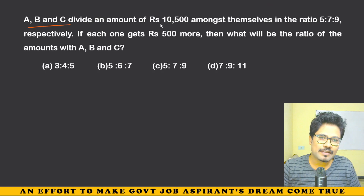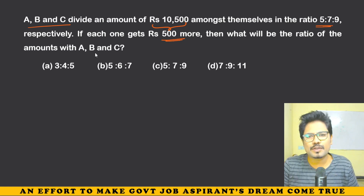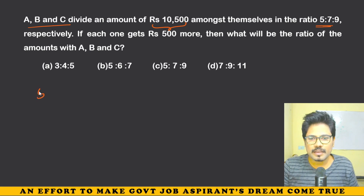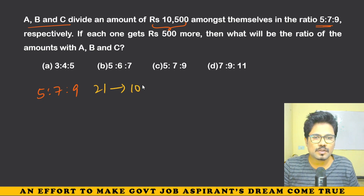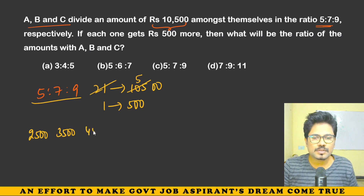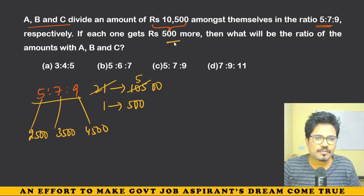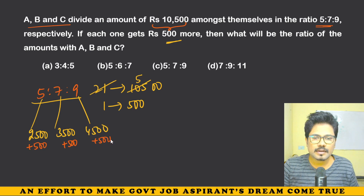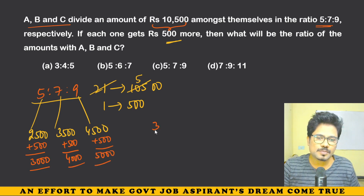Next question: A, B and C divide an amount of 10,500 amongst themselves in the ratio 5:7:9. If each one gets 500 more, what will be the new ratio? Total units = 5+7+9 = 21. So 21 units = 10,500, meaning 1 unit = 500. The shares are 2,500; 3,500; and 4,500. Adding 500 to each gives 3,000; 4,000; and 5,000. The new ratio is 3:4:5.